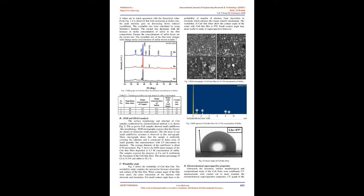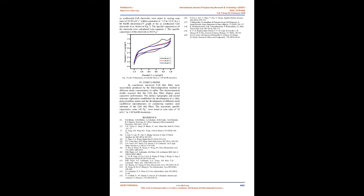All of the samples display an analogous XRD pattern, which indicates development of the films in a specific way. Diffraction peaks of other phases or impurities were not observed. Further it was observed that the precursors have been totally converted into CuS nanostructures. All the d values are in much agreement with the theoretical value. From Figure 1, it is observed that with increasing molar concentration, the peak intensity goes on decreasing showing reduced crystallinity. The crystallite size were calculated by using Scherrer's formula. The crystal size decreases with the increase in molar concentration of sulfur in the film composition. Greater the concentrations of sulfur, lesser are the crystal size. The crystallite size of the film were changes with change in molar concentration of sulfur shown in Table 1.